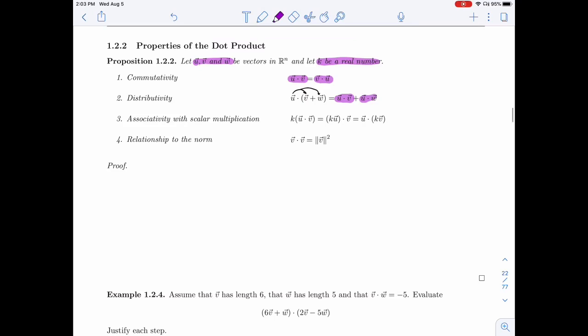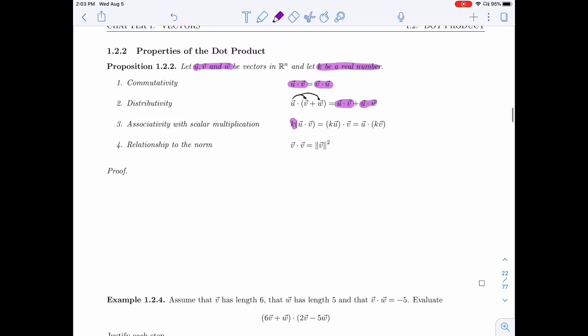Then if I have a real number multiplying a dot product, I can multiply u by it or I can multiply v by it and then take the dot product and I'll get the same result.